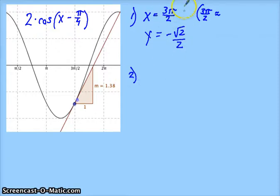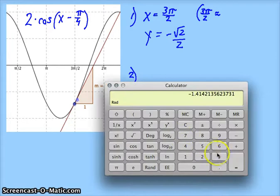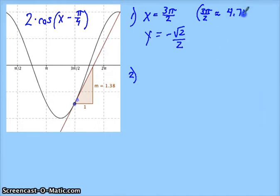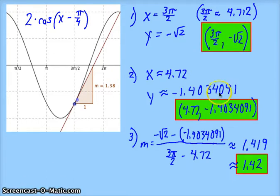Now, remember, we want to get a point very close to this, 3π over 2. I know 3 times π divided by 2 is 4.712. So what I'm going to do is I'm going to choose a point. Let's say 4.72. So I've gone ahead and done the calculations.